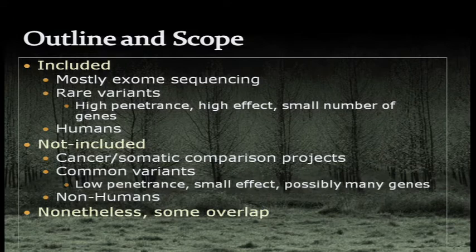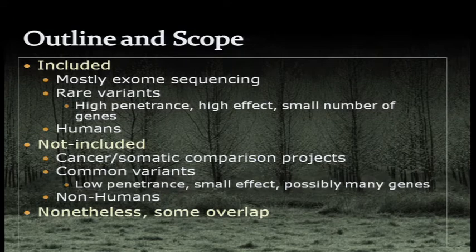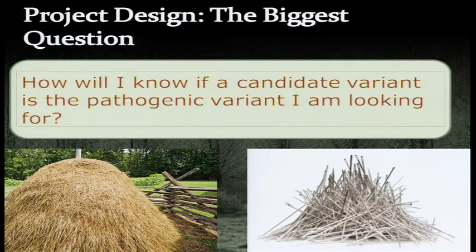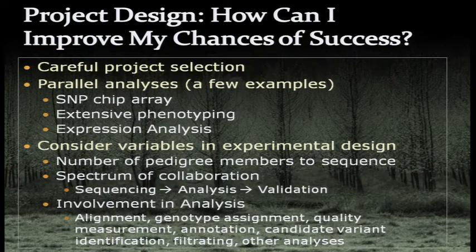Because of my background, the examples I'm going to use are for Mendelian inherited diseases — high penetrance, small number of genes in humans. Hopefully there will be some overlap if you work with different types of projects. The basic problem, as we've discussed, is that when you look for the needle in the haystack you often end up with a big pile of needles, and you need to pick which one is your disease-causing variant. So how can you improve your chances of success?